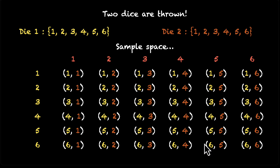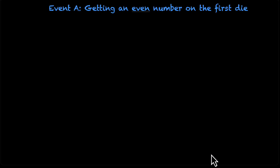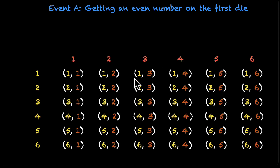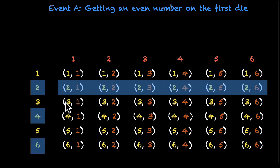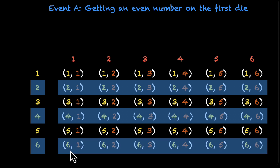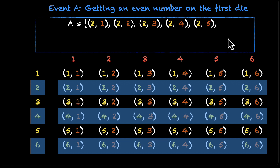Next, let's define our events. Event A is getting an even number on the first die. We have three even numbers: two, four, and six. So the entire rows for die-one showing two, four, and six are part of event A. For example, the outcome (2, 5) means die one shows two, which is even — it doesn't matter what the second die shows, because we are only concerned about the first die.